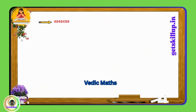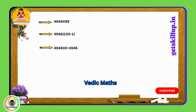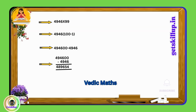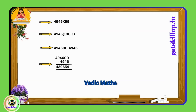If we want to multiply a number like 4946 by 99, then we add 2 zeros to the right of the number, giving 494600, and then subtract the original number 4946 from this result. The subtraction is performed similarly from right to left. So, 494600 minus 4946 equals 489,654. This method is applicable not only to small numbers but also to larger ones.